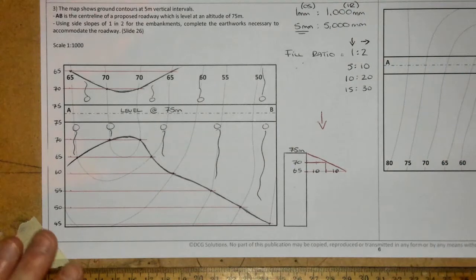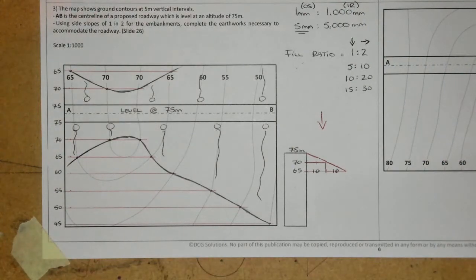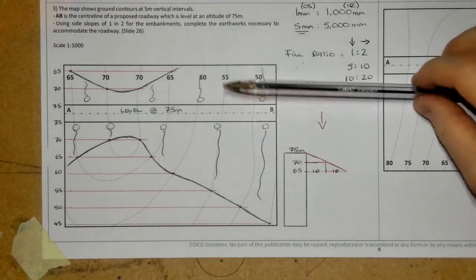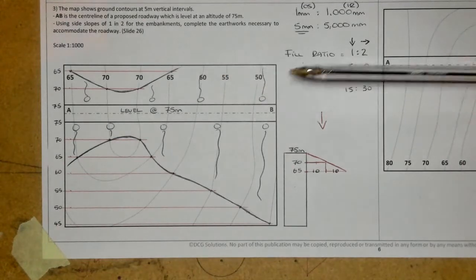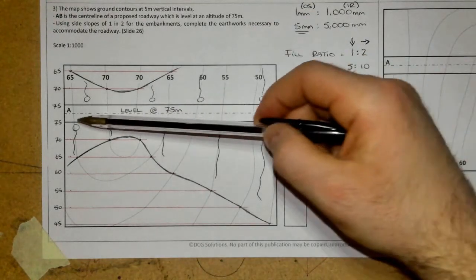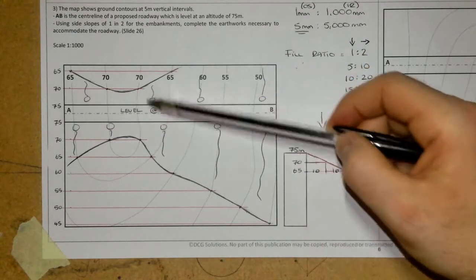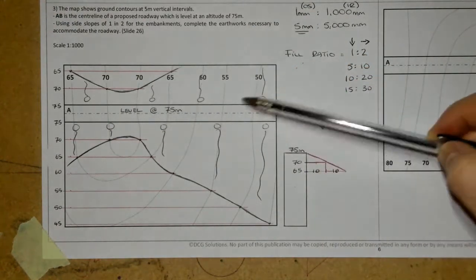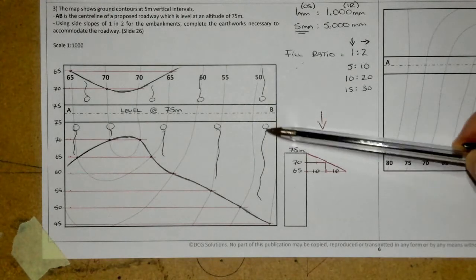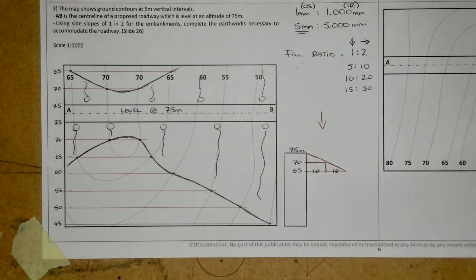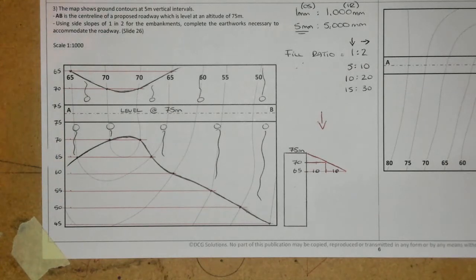The earthworks for question 3 are now complete. The fill embankments are drawn in on both north and south sides, with tadpoles showing the direction a ball would roll away from the road going downhill. That's question 3 done — moving on to the final question on the page.